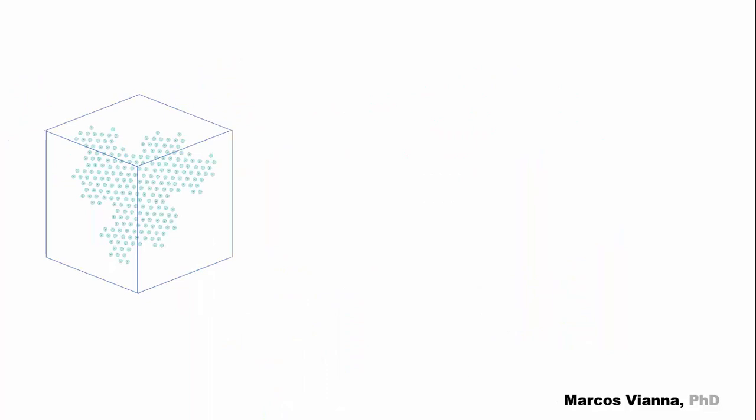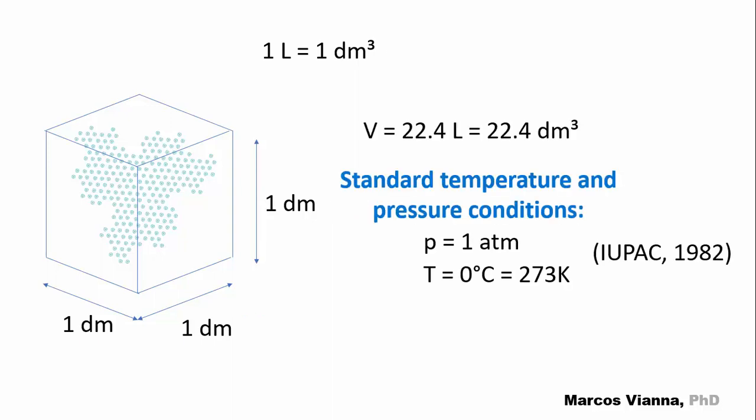But, let's keep calm. Let's consider once more the frozen particles of the vapor or gas contained in a 1 liter or 1 cubic decimeter container. For those of you who prefer imperial units, 1 liter is about 64 cubic inches. The International Union for Pure and Applied Chemistry, in short, IUPAC, fixed the following conditions for the standard temperature and pressure conditions. Pressure equals 1 atmosphere and temperature equals 0 degrees Celsius, equals 273 Kelvin.